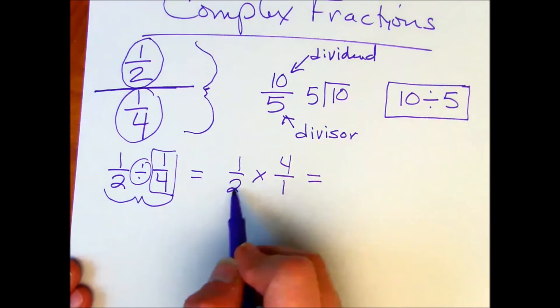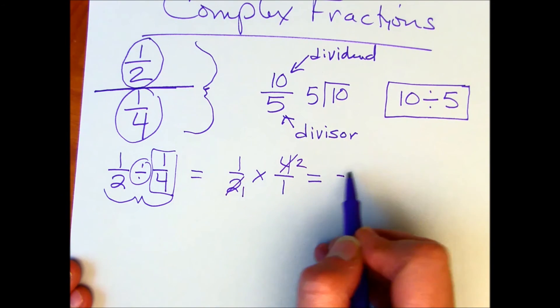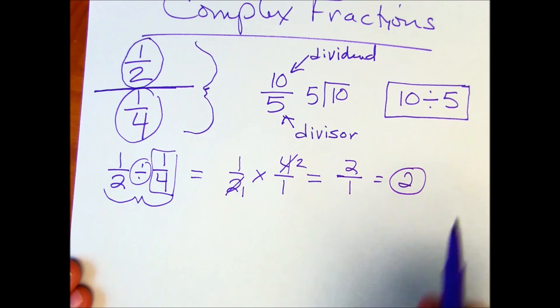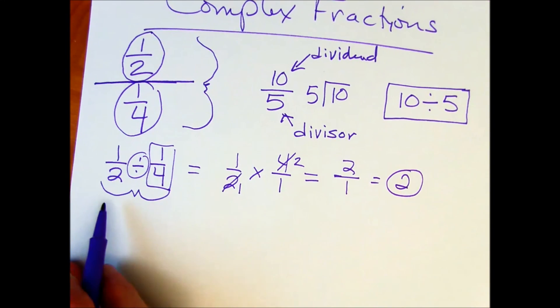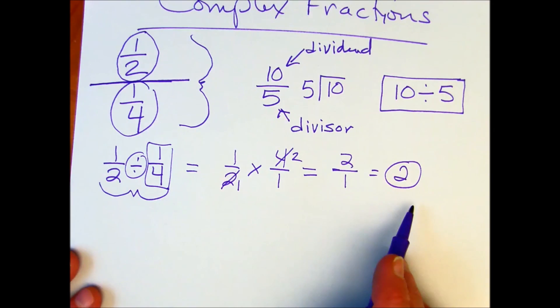We can reduce: two goes into the four twice, two goes into two once, and then we get two over one or two. And we've done examples just like this. So none of this should be new. Thank you.